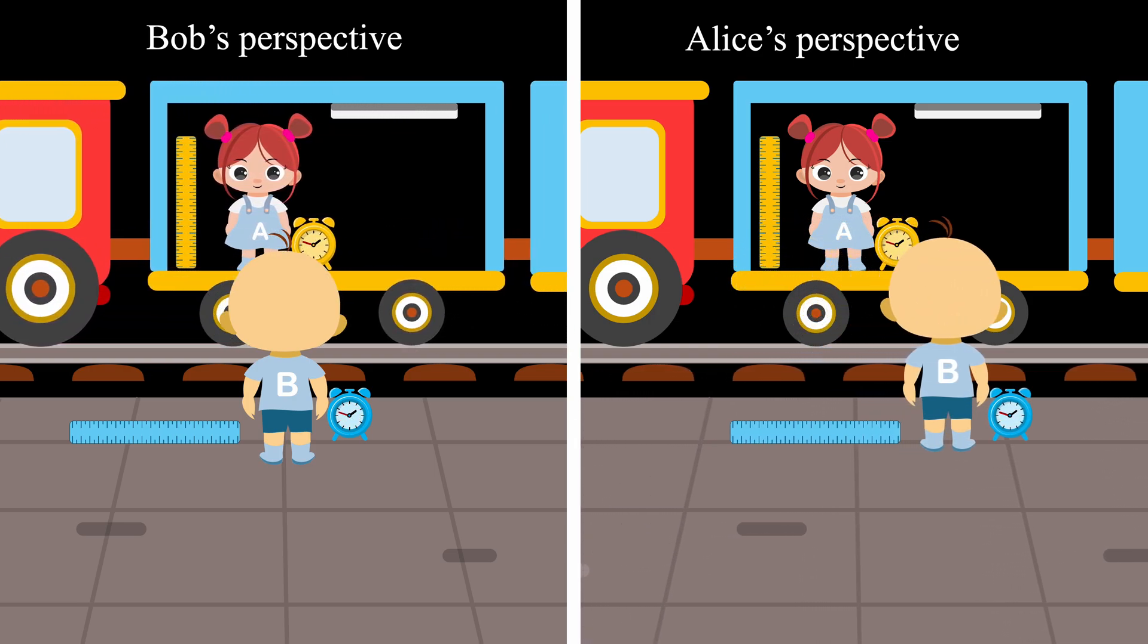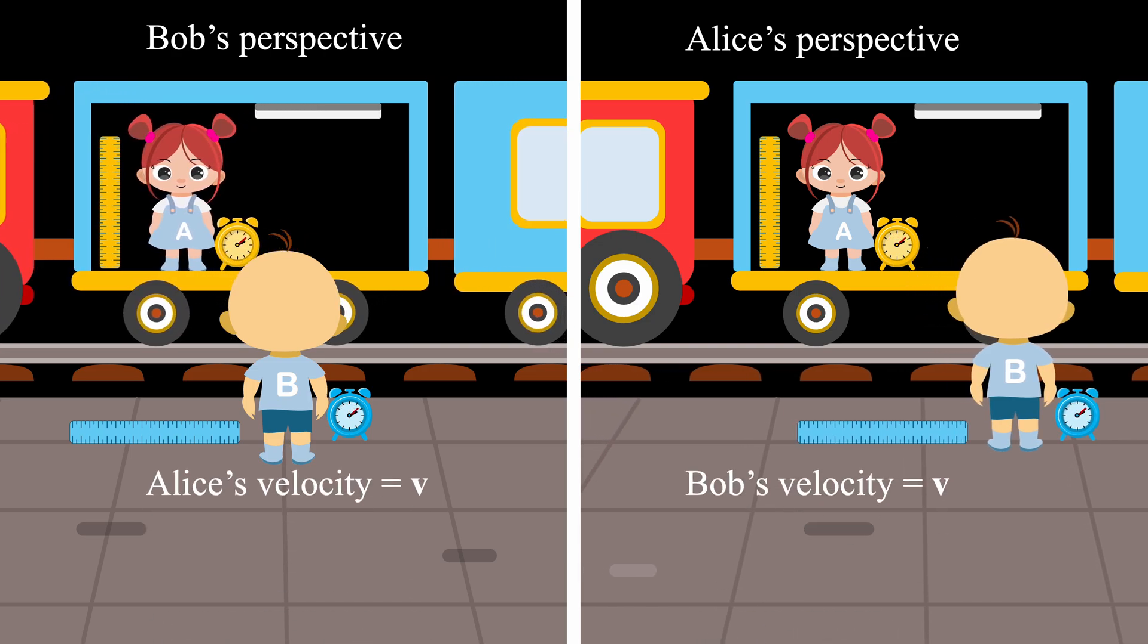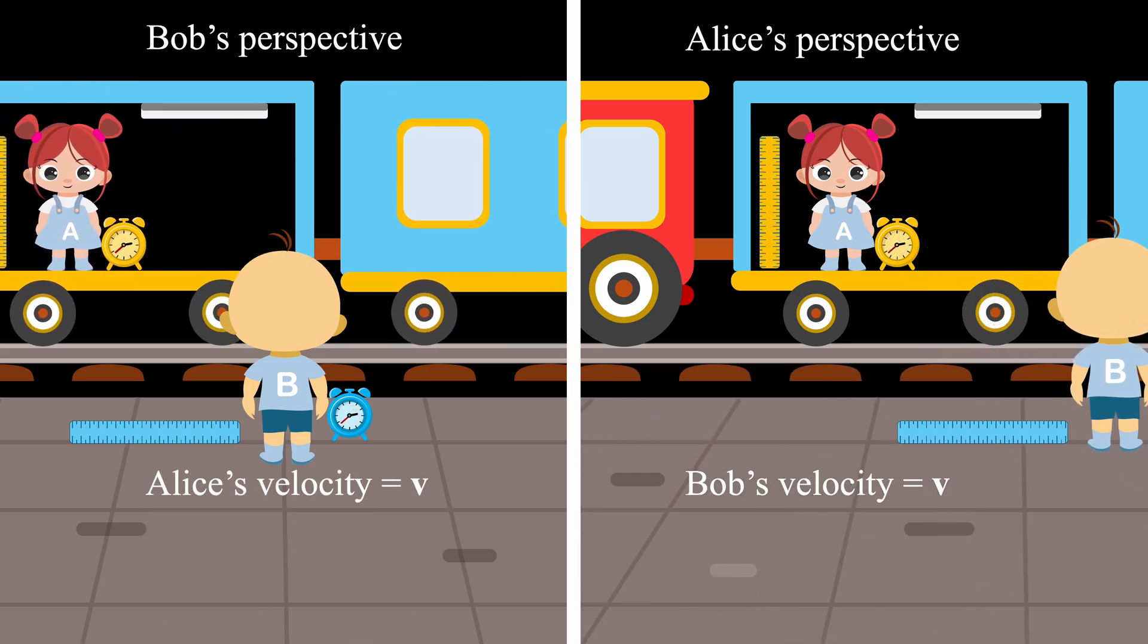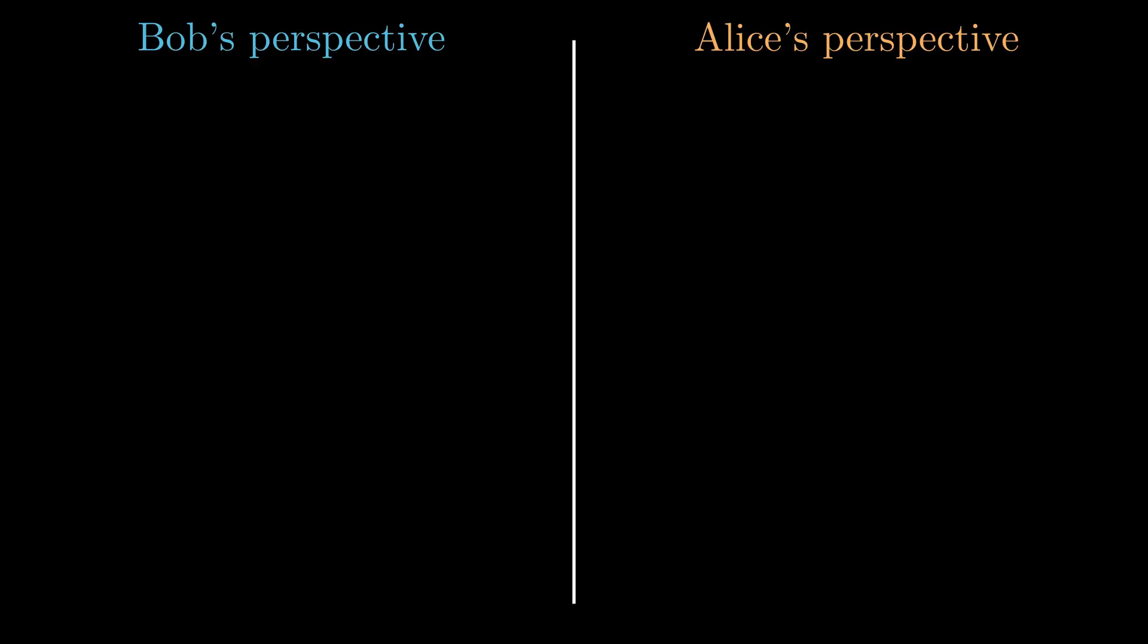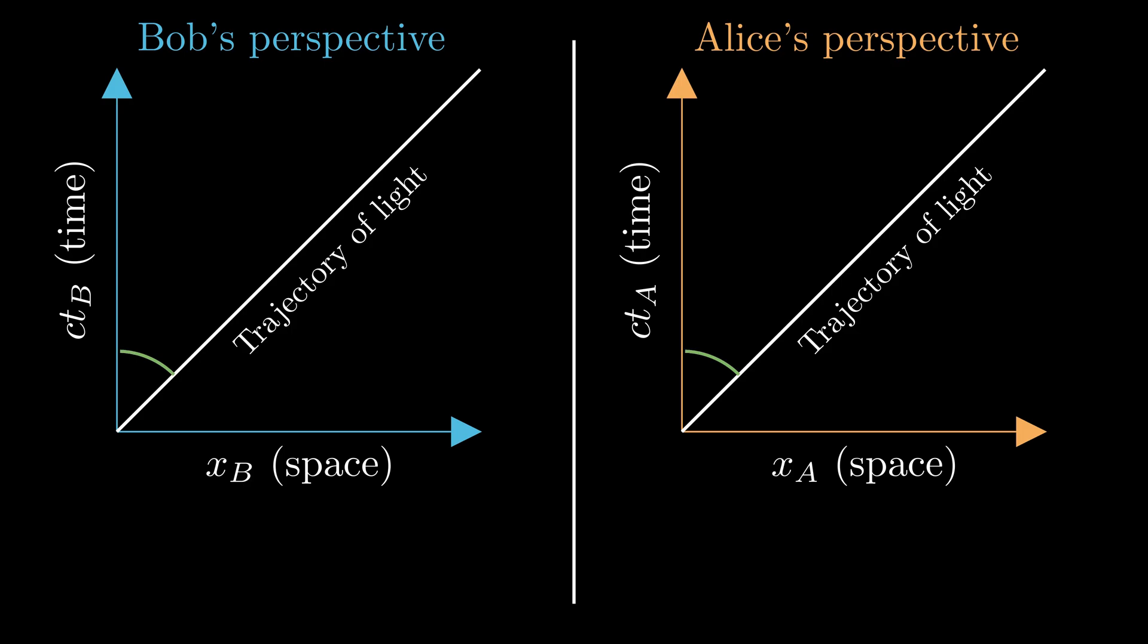This means that any experiment such as measuring relative velocity will yield the same results for both Bob and Alice. The second concept says that despite their relative motion, the speed of light remains the same for both.